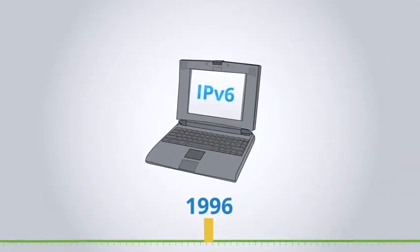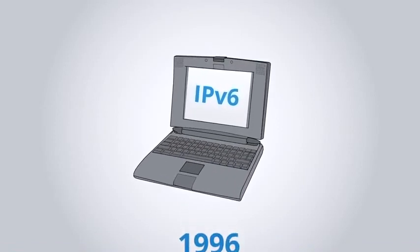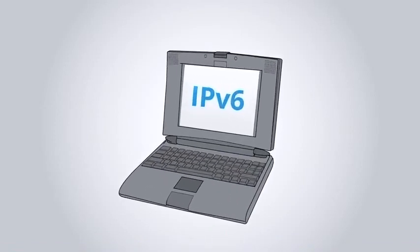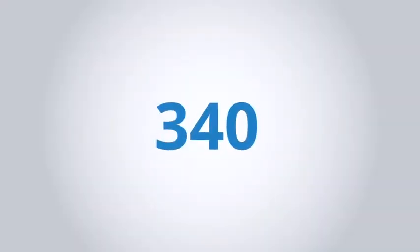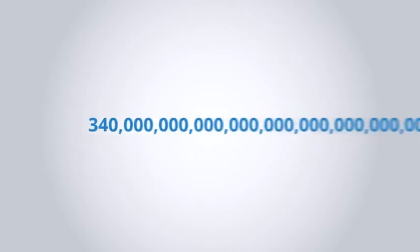In 1996, we designed a different format for internet packets called IP version 6. It has 128 bits of address space. Translating that, it's 3.4 times 10 to the 38th addresses — or 340 trillion, trillion, trillion addresses.